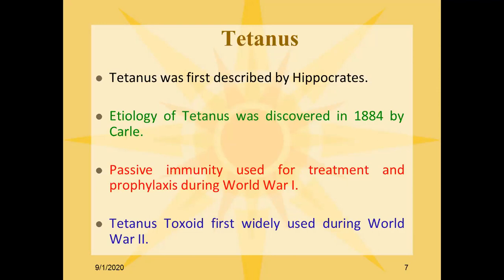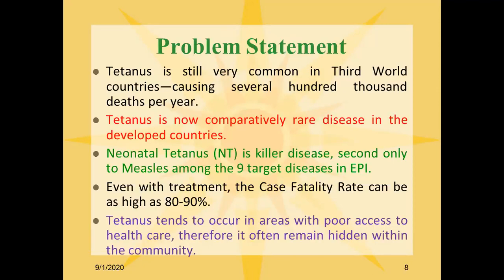Tetanus toxoid was first widely used during World War II. Tetanus is still very common in third world countries, causing several hundred thousand deaths per year. It is now comparatively rare in developed nations. Neonatal tetanus is a killer disease, second only to measles among the nine target diseases in EPI in Pakistan, though there are now 10 EPI diseases against which vaccines are given to newborns.